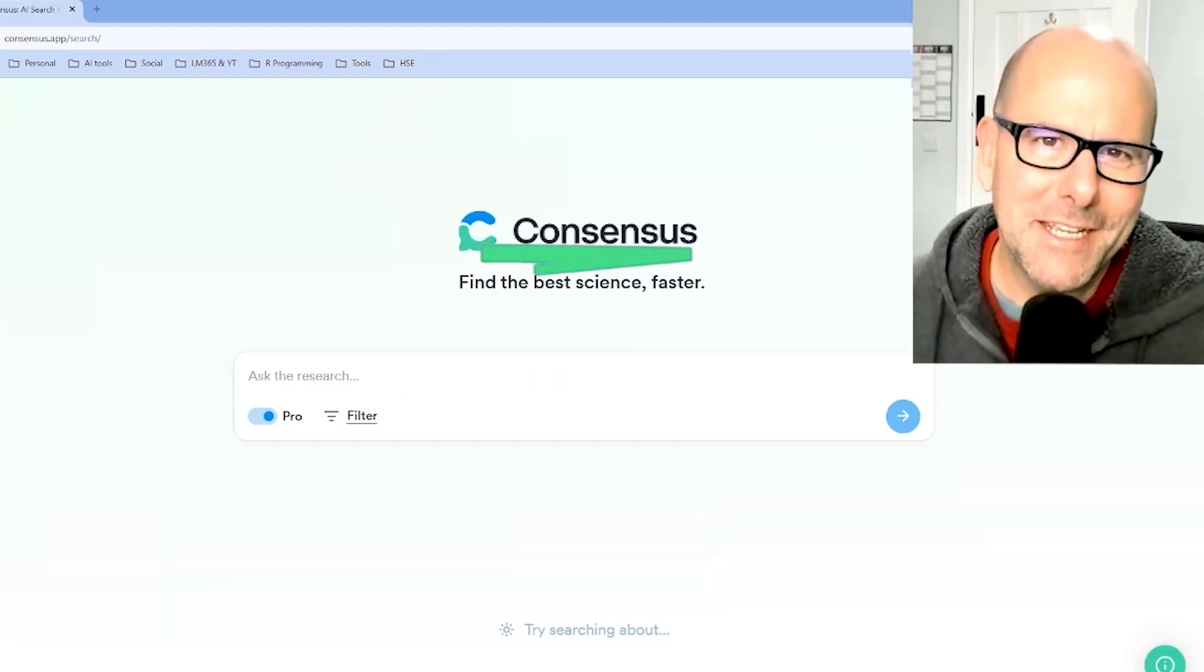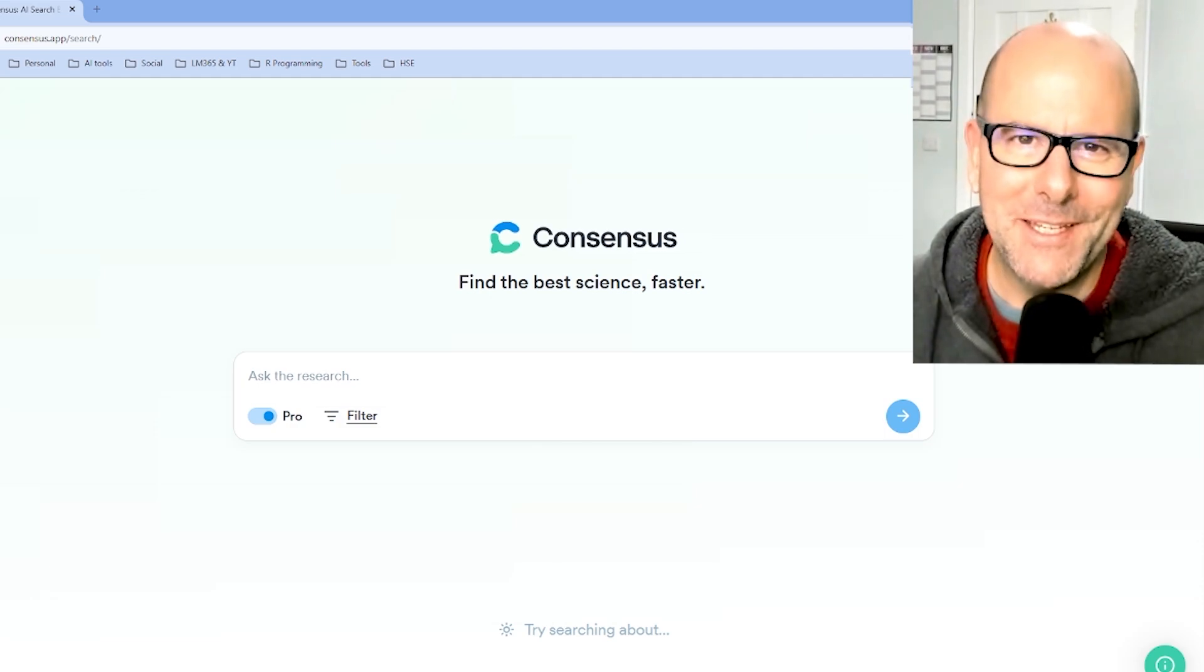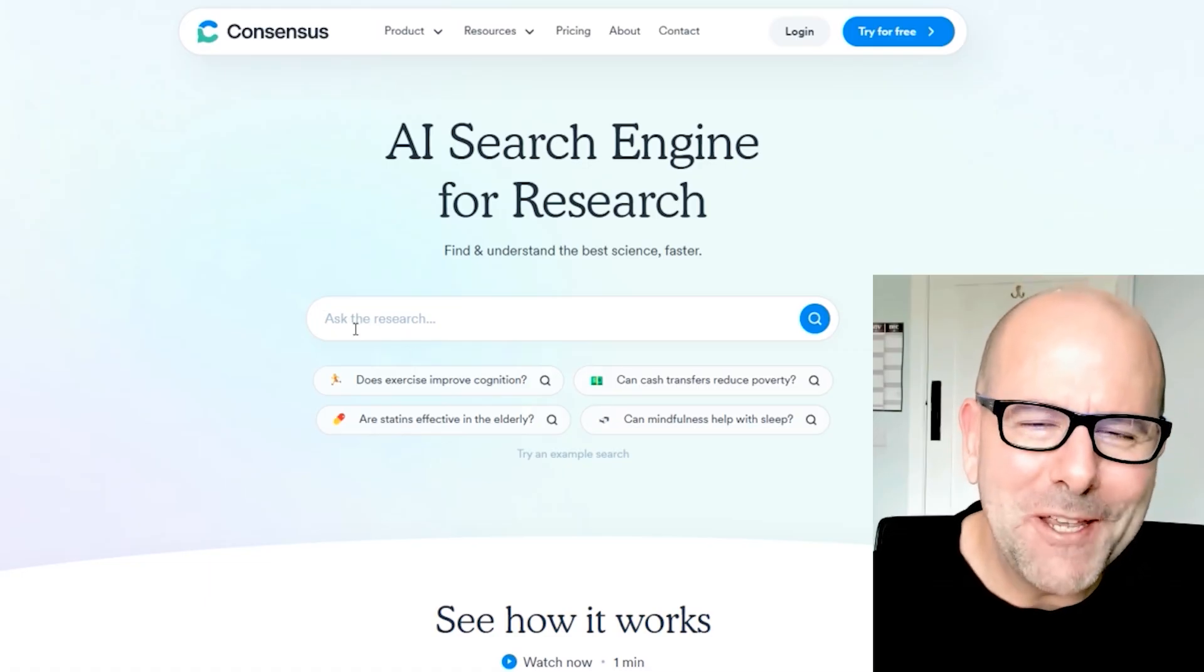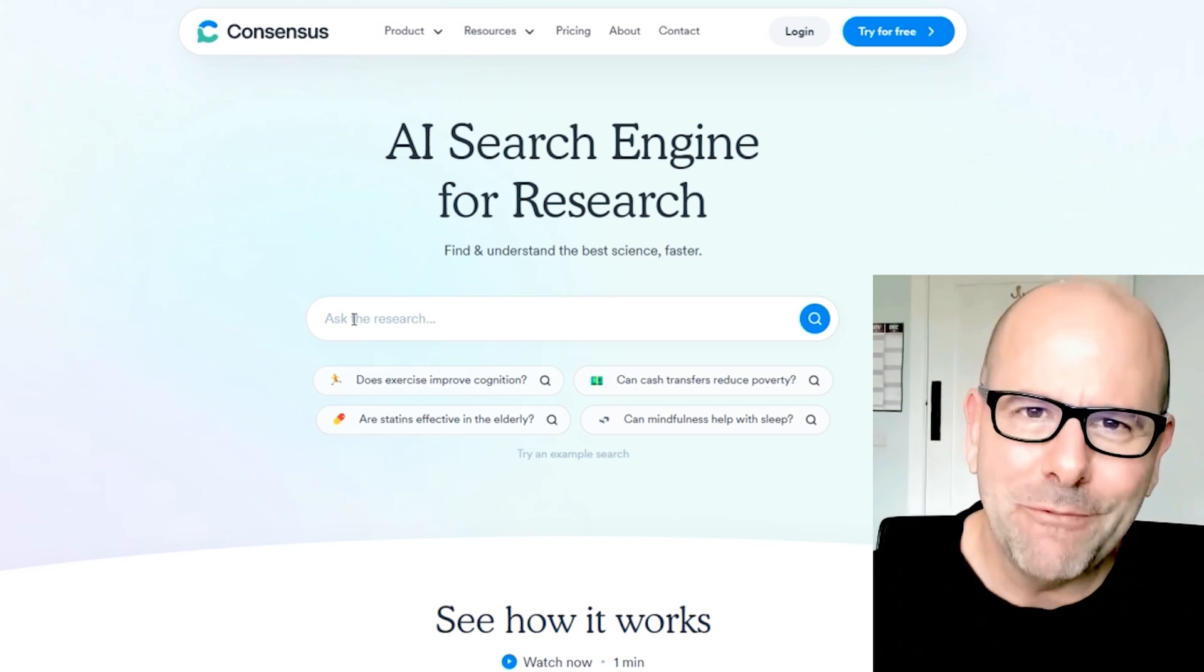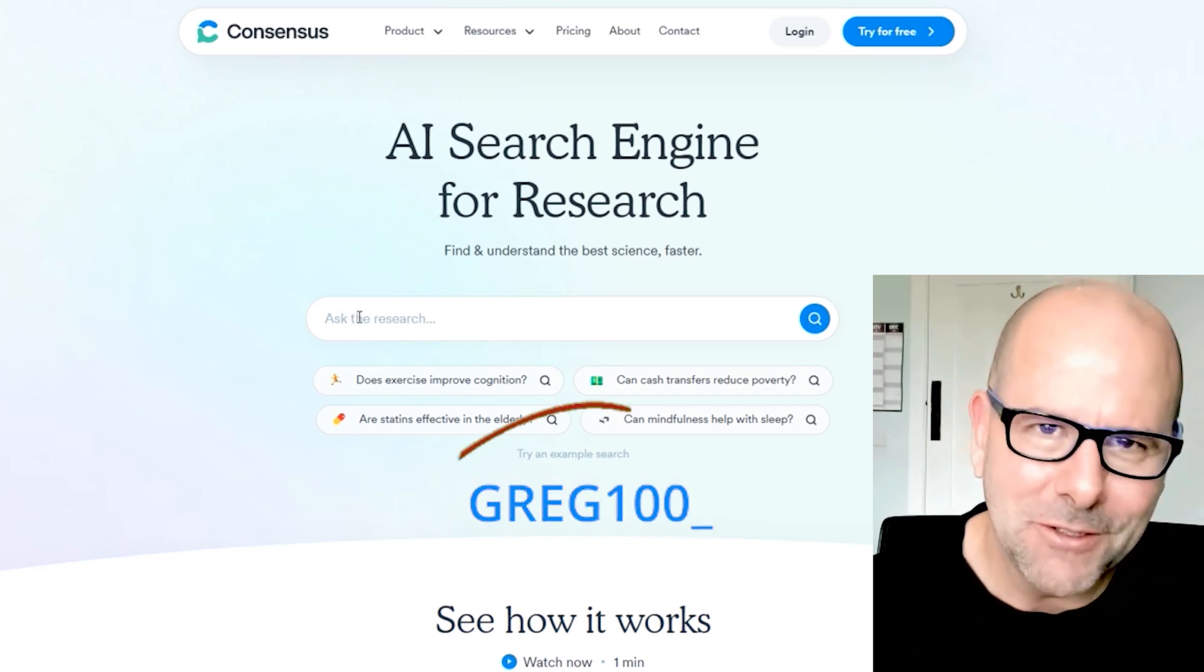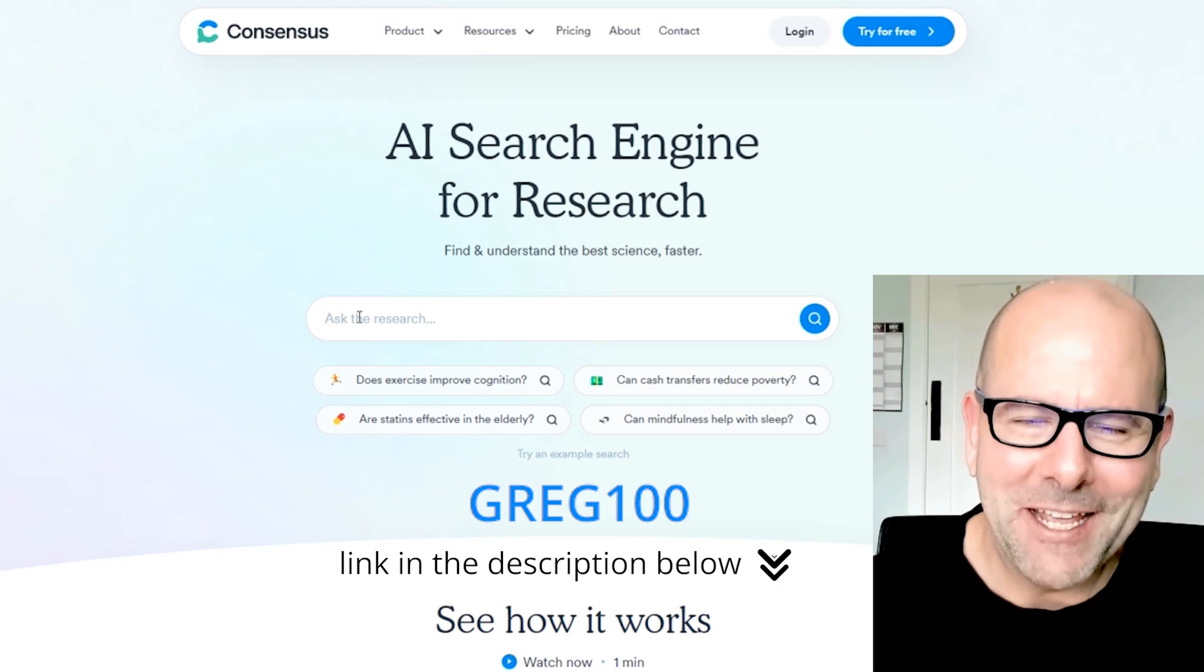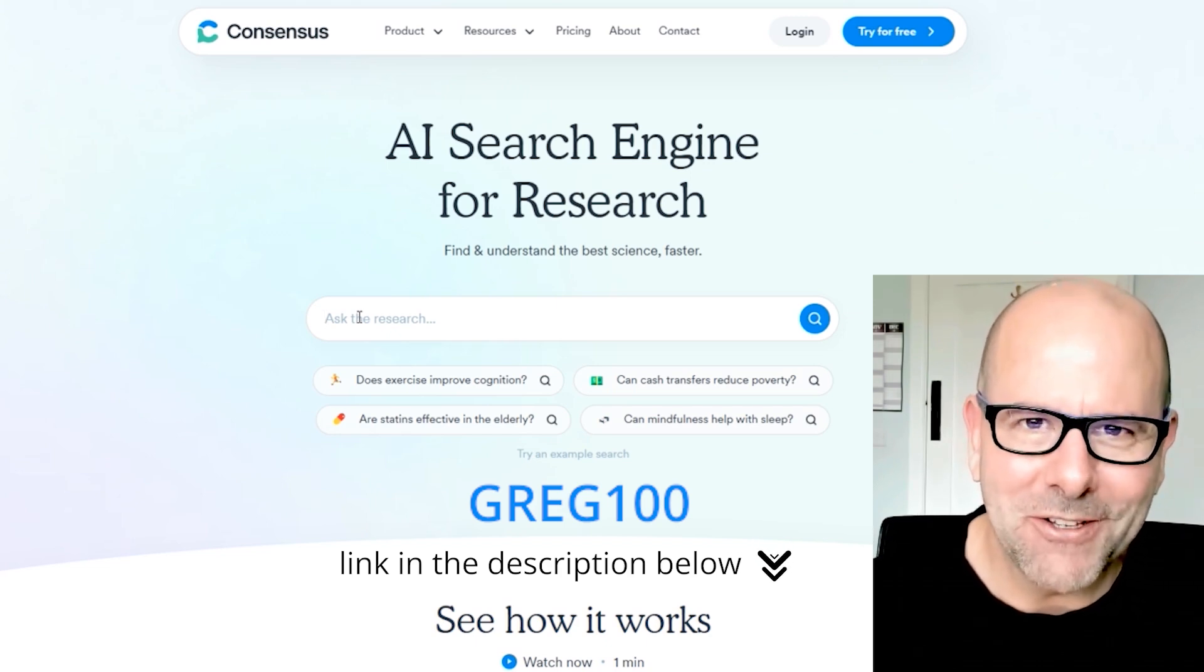So take a look at ConsenSys today. I'll put a link in the description below. You will absolutely love it. Breaking news, you can get one year of free ConsenSys premium if you use the offer code GREG100 and it's capital G-R-E-G 100. One year for free. That's amazing. Do it now. ConsenSys.app.